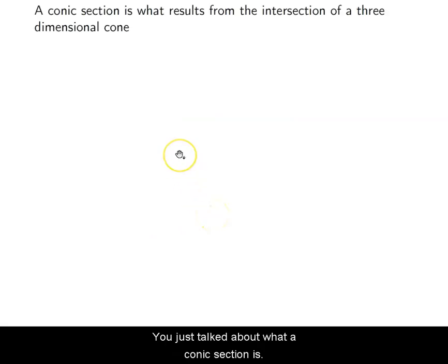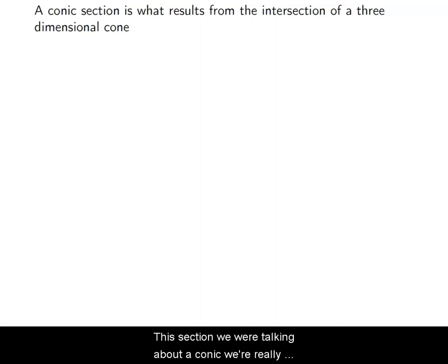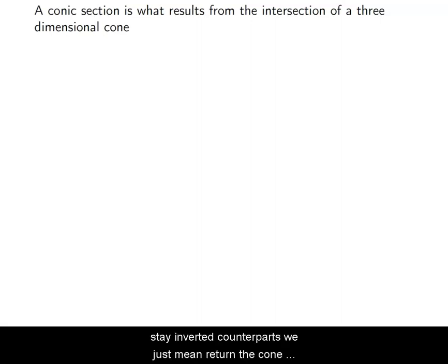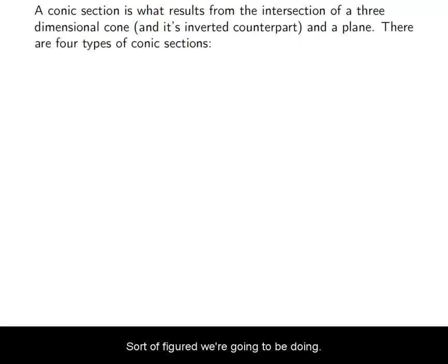A conic section is basically a slice of a cone. A cone is like a pyramid but with a circular base instead of a square base. For this section, when we're talking about a conic, we're really talking about a cone and its inverted counterpart — placed tip to tip, basically like an hourglass.